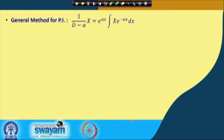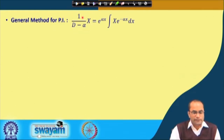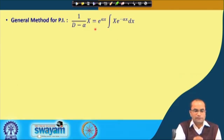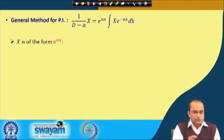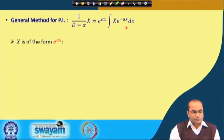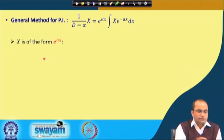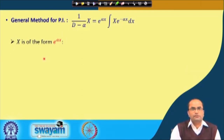Just to recall from the previous lecture, the general method for getting this particular integral was: 1 over (D minus α) when we apply on X — X is a function of small x — then we get e^(αx) times the integral of X·e^(−αx) dx outside the integral.